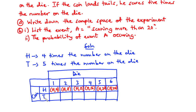Now assuming the coin lands tails and the die shows one, we multiply one by five to give five — so tails 5. Continuing: tails 10, tails 15, tails 20, tails 25, and then tails 30.